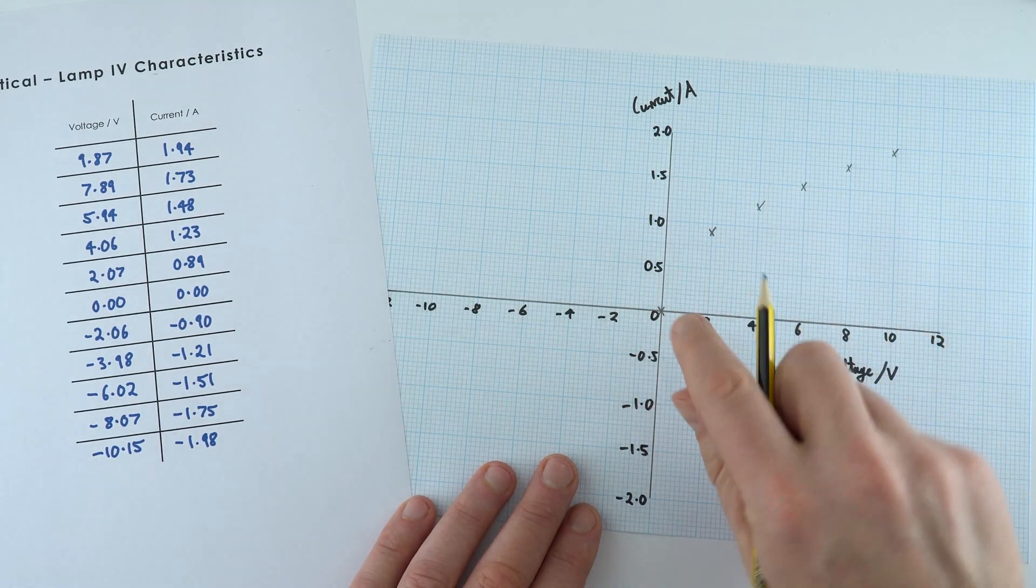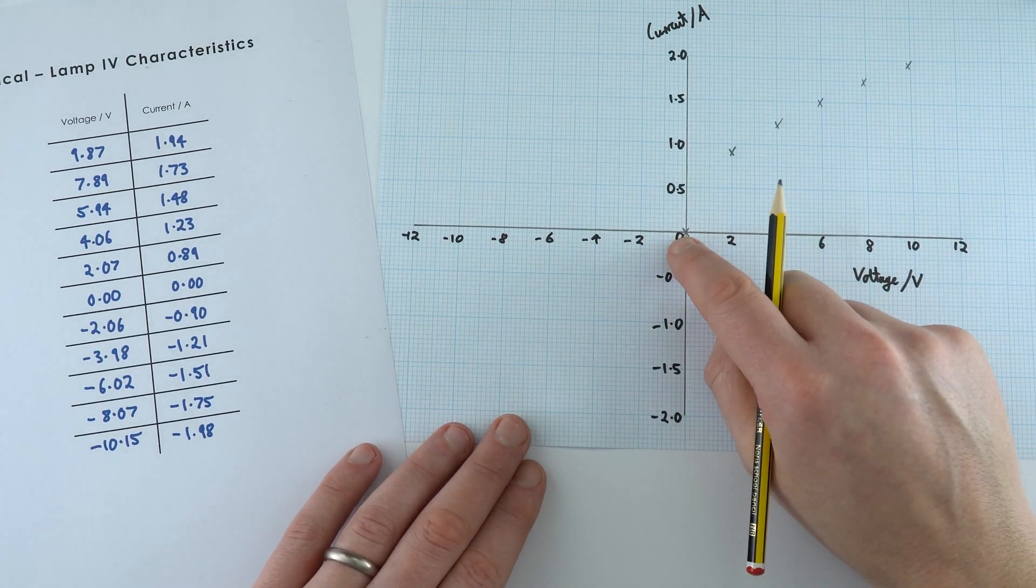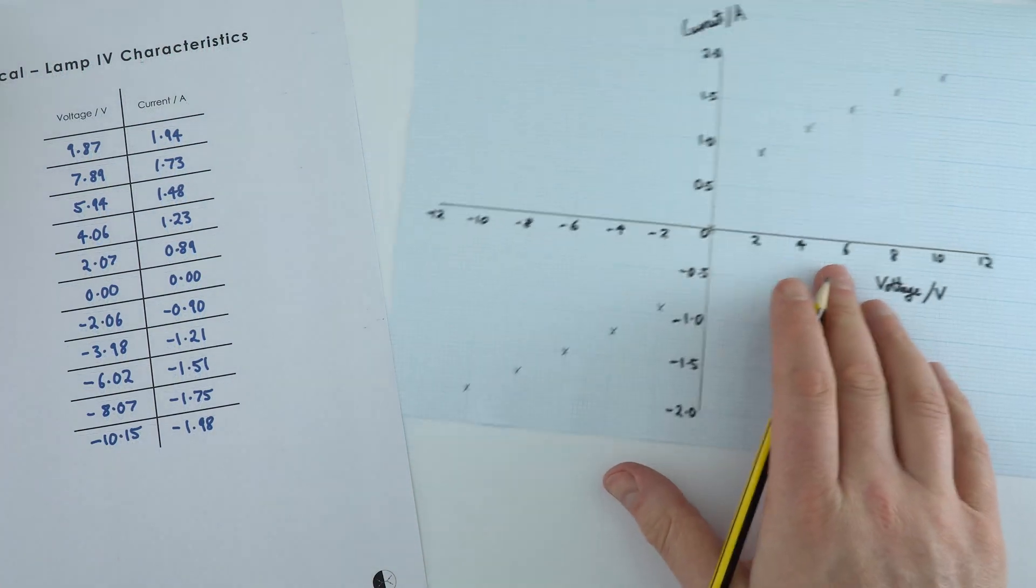And we've got the origin here because when there's no voltage there's going to be no current and then we've got the negative values as well. Okay so that's the data plotted.